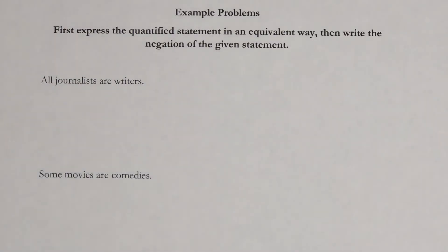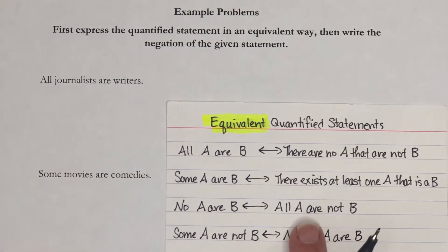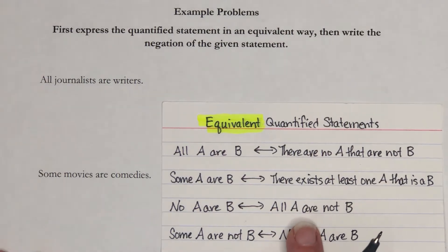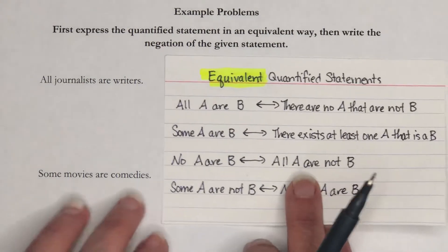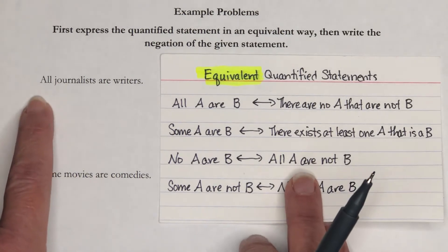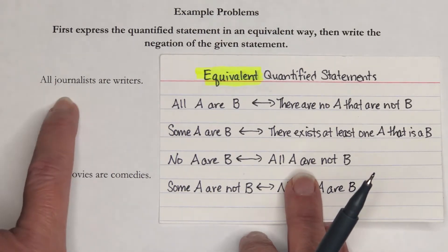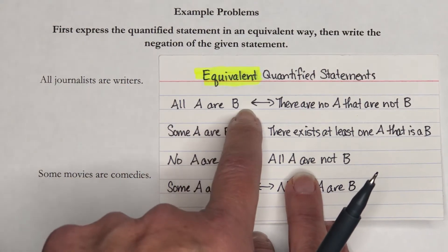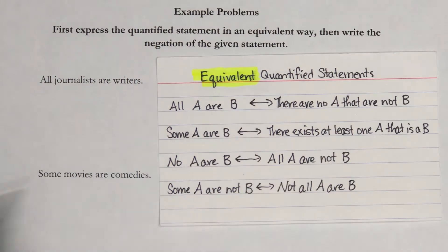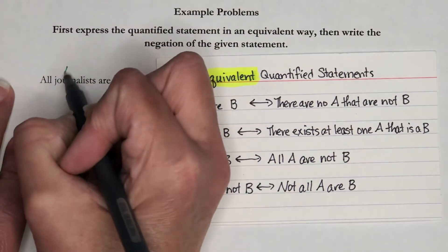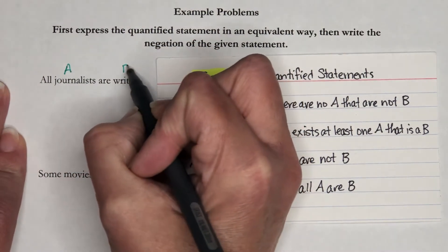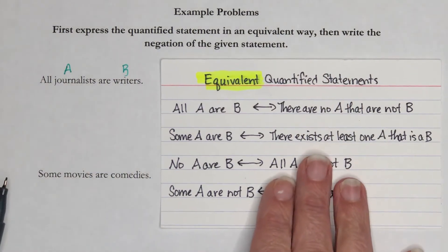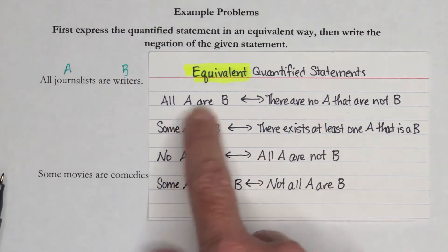What I'm going to do here is go through first and write down all of the equivalent statements, and then I will come back and work on the negations. This is all about pattern matching. The first statement is: All journalists are writers. Which pattern do we have? All A are B — where A is journalists and B is writers. It might help to put A and B over the parts you're talking about. So here we go: All A are B.